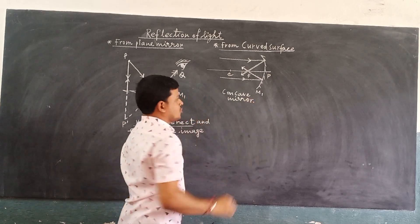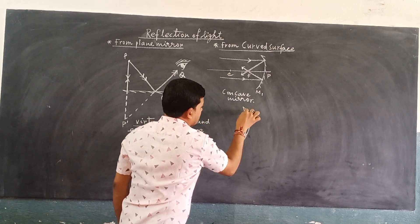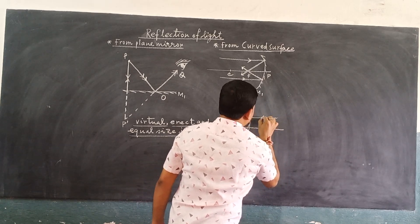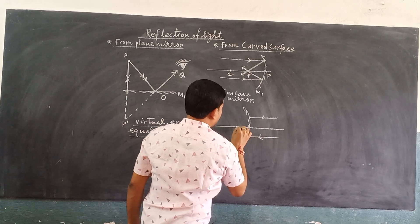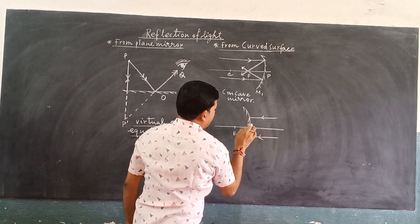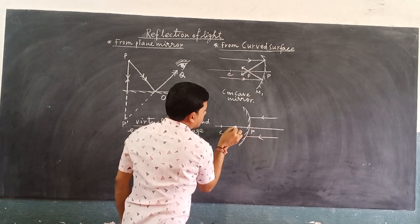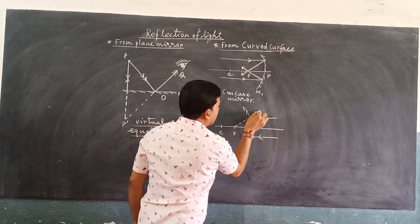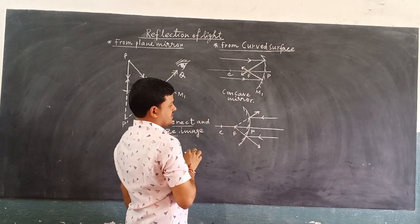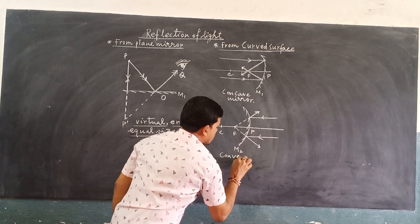In the case of a convex mirror (M2), the outward surface is the reflecting surface. Light rays coming parallel to the principal axis, after reflection, appear to diverge from a point on the principal axis. As the light rays diverge after reflection, this is called the diverging mirror — the convex mirror.